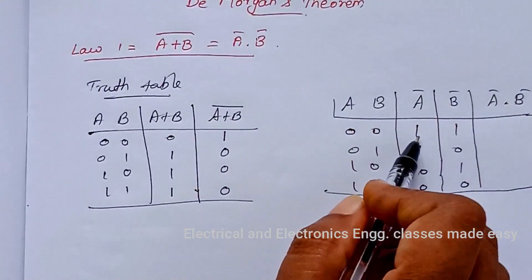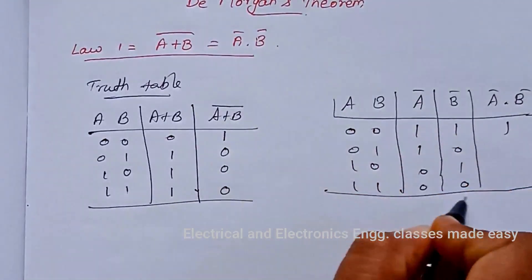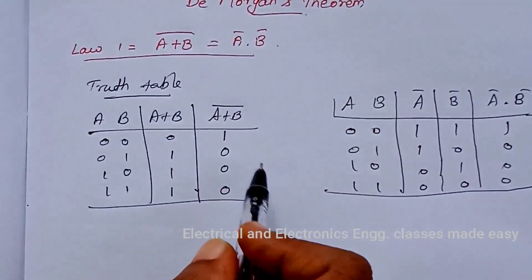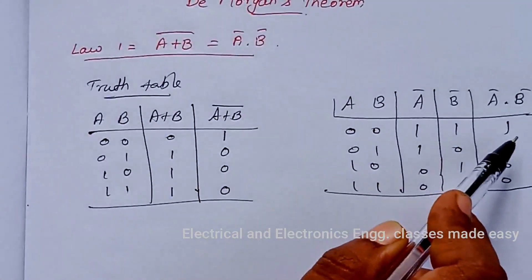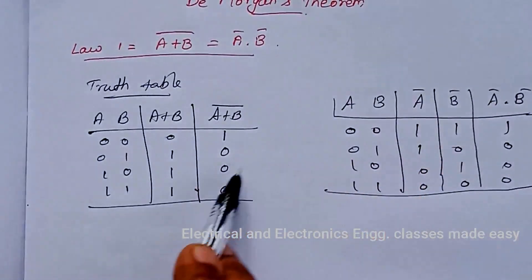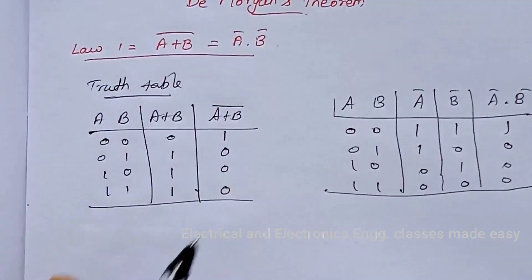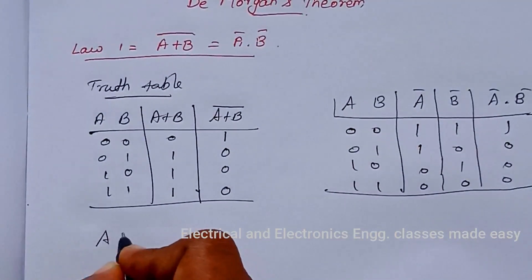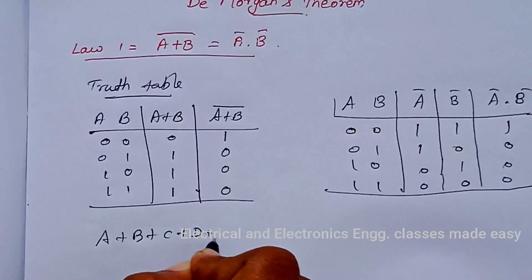That is, 1 dot 1 is 1, all others are 0. Therefore, A plus B whole bar is the same as A bar dot B bar. This confirms Law 1.